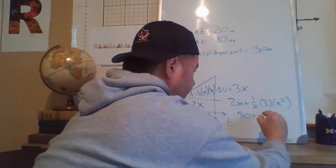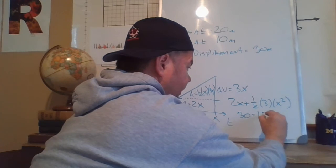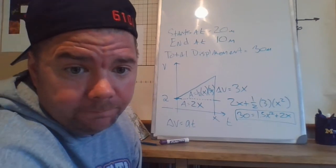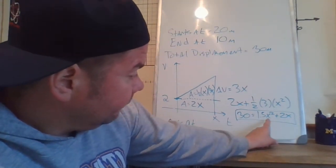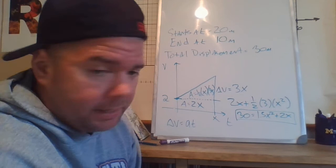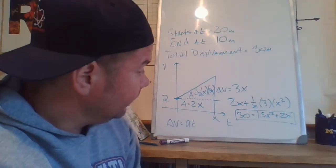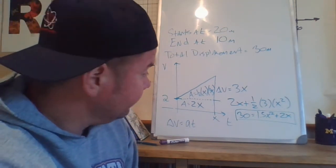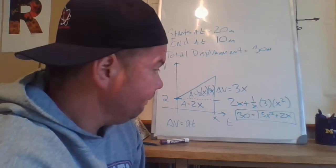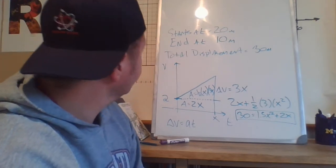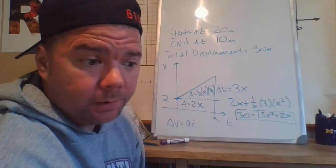So the equation is: 1.5x² + 2x = 30. That's the equation you need to solve to find the unknown time. From this point it's solving a quadratic. If you need a refresher on how to solve quadratics, hit me up in office hours and we can work through it.